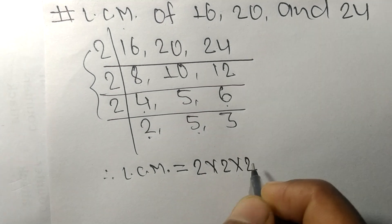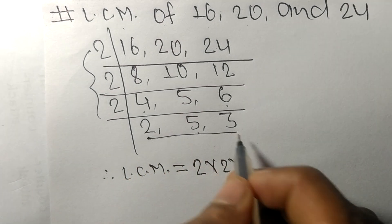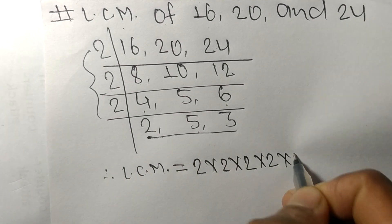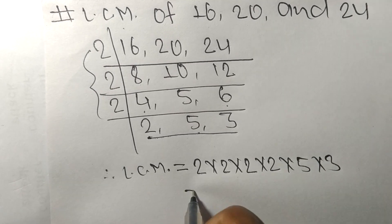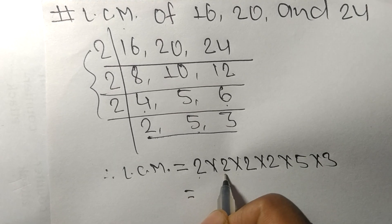It is 2 times 2 times 2 from this side, and 2, 5, and 3. 2 times 2 means 4, 4 times 2 means 8, 8 times 2 means 16.